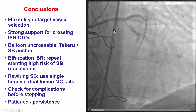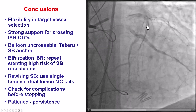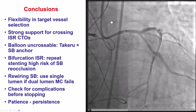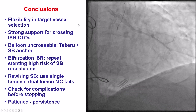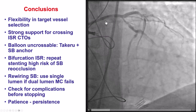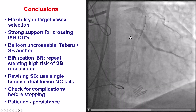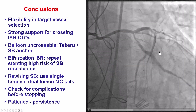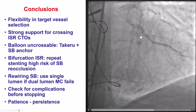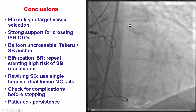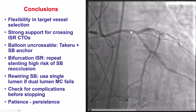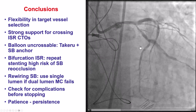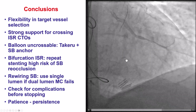We also had a complication — a dissection in the LAD that we treated with stenting. Overall, this case shows the importance of persistence. We had multiple challenges with wire crossing, microcatheter and balloon crossing, and wiring the side branch. We used multiple techniques to overcome these challenges. Eventually, we were successful in recanalizing both the OM-1 and the distal circumflex, achieving a nice final result. Thank you.